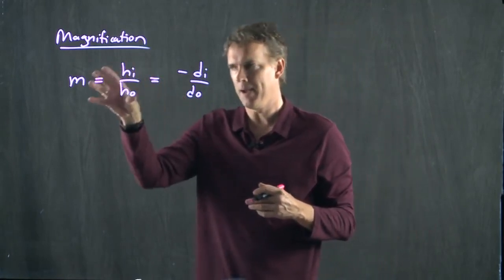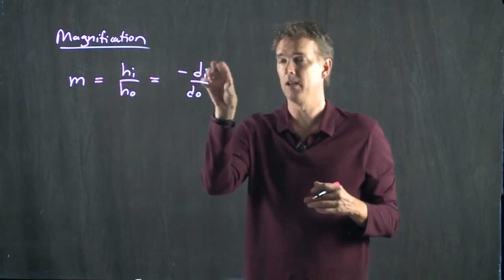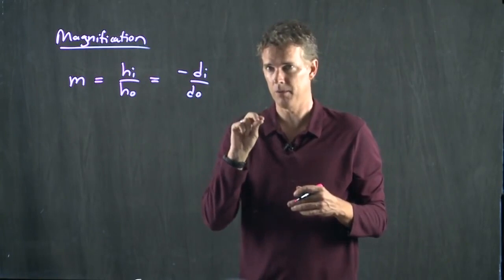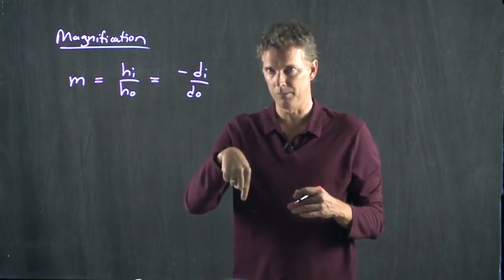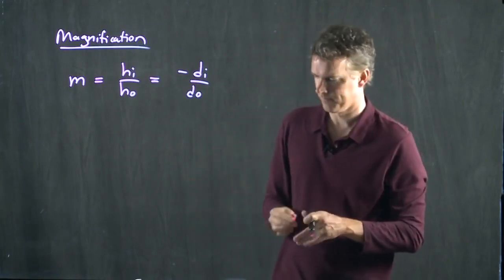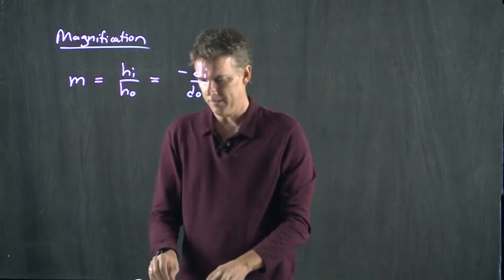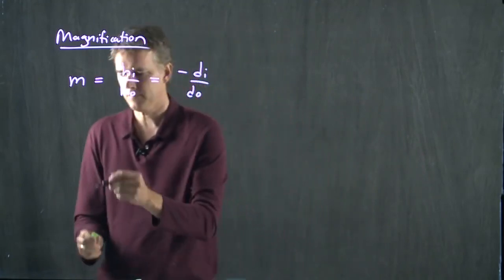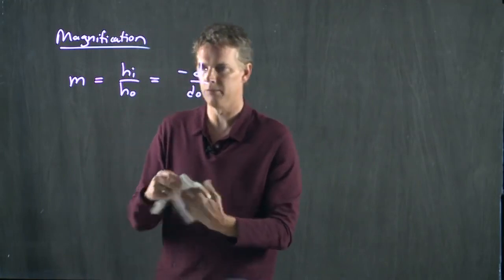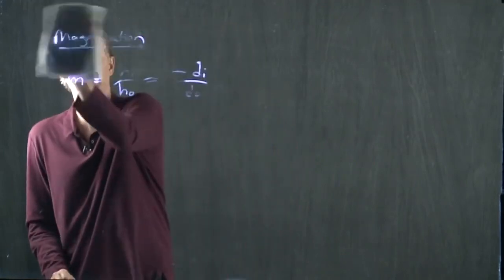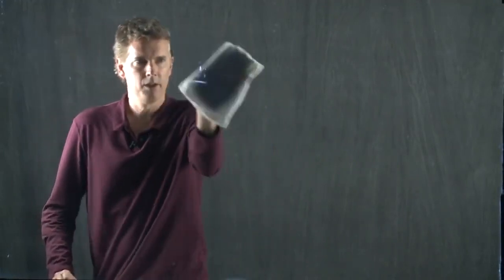If the magnification is less than 0, if it's a negative number, that just means the image is upside down, it's inverted. All right, let's talk about convex mirrors. Right now we just covered concave mirrors, but of course you can have image formation with convex mirrors.